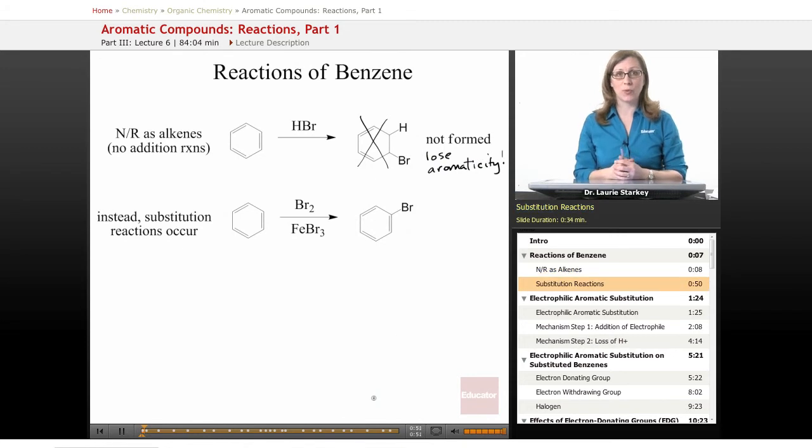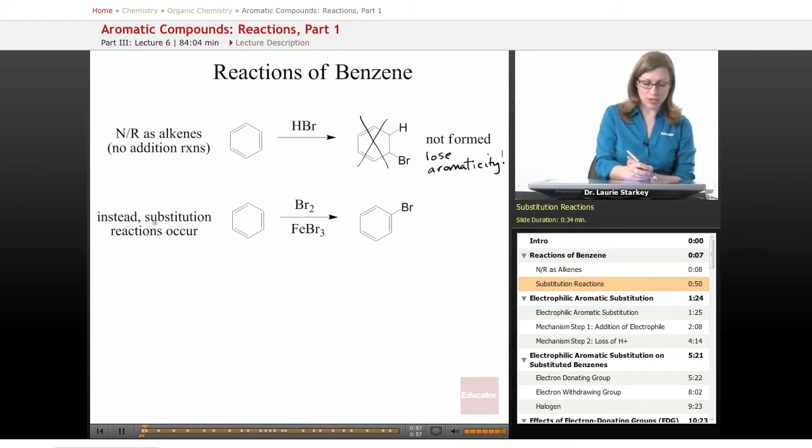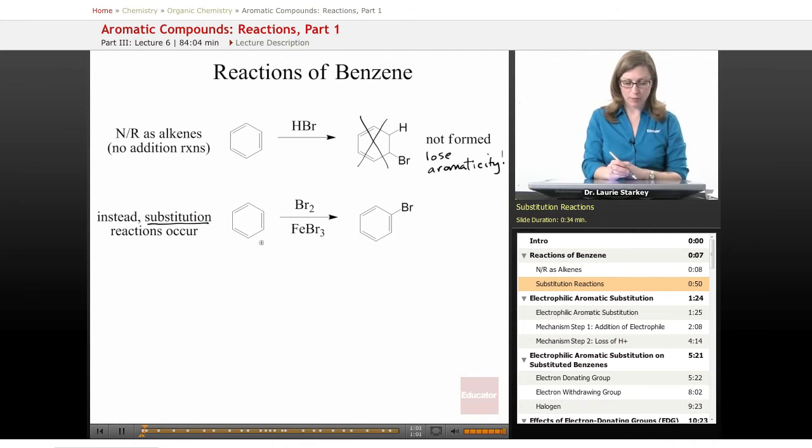So instead, the reactions that benzene undergoes, we have substitution reactions occurring. So we have a benzene ring, we react it with bromine, and where we used to have a hydrogen, we now end up with a bromine.